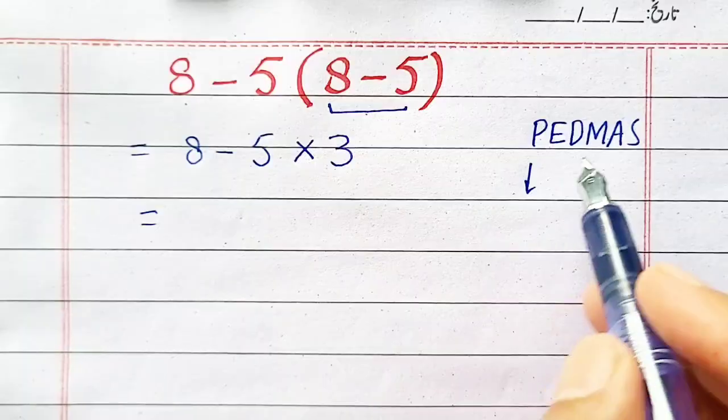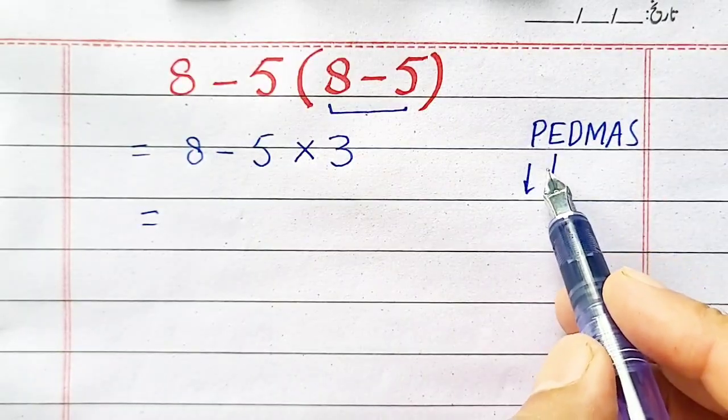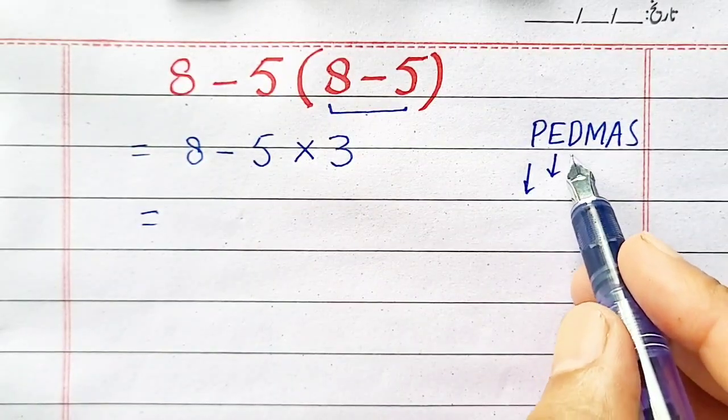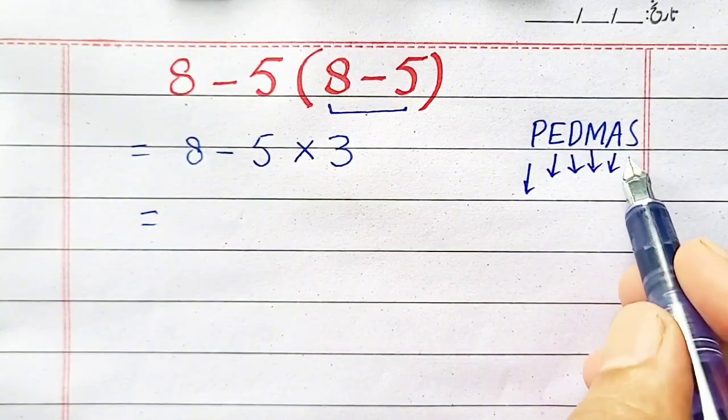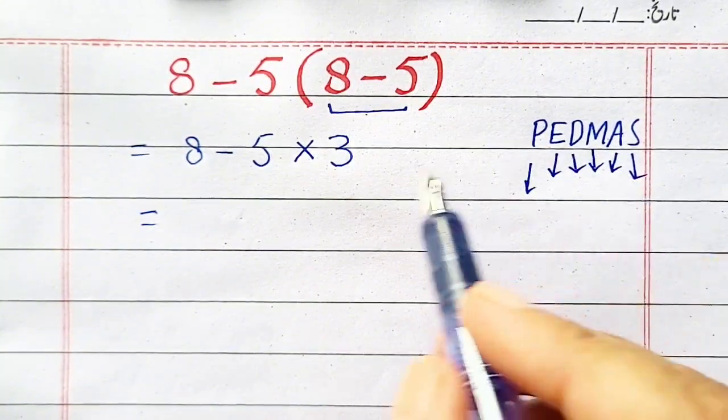Now, according to this rule, E stands for exponent, D for division, M for multiplication, A for addition, and S for subtraction.